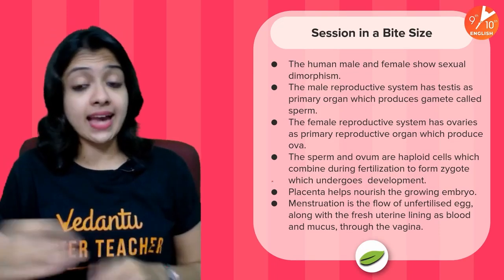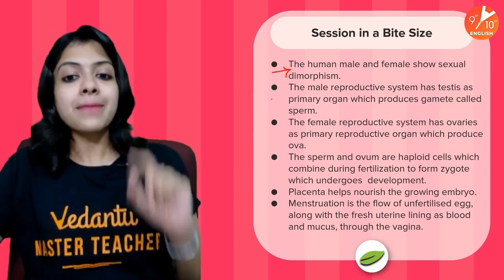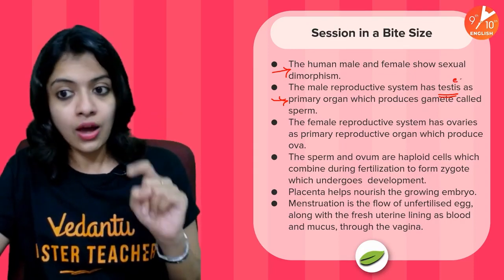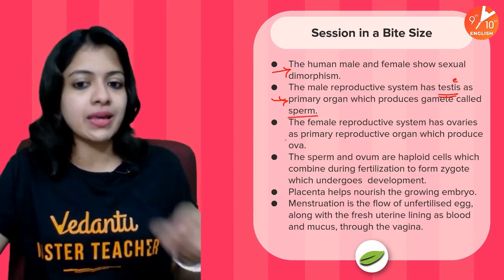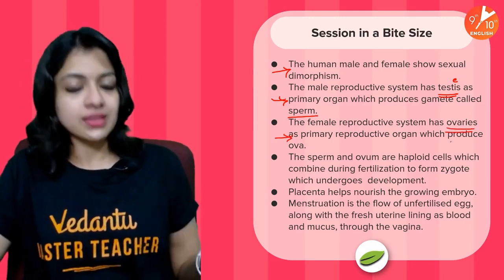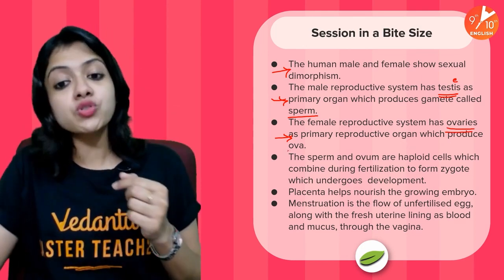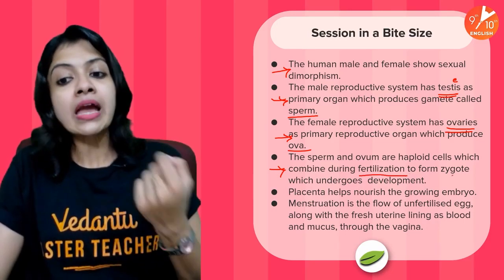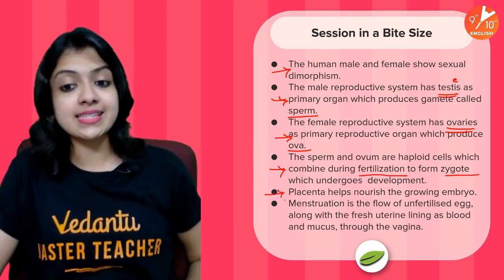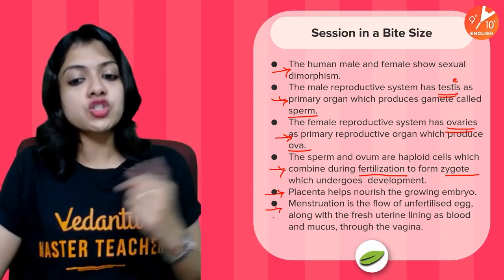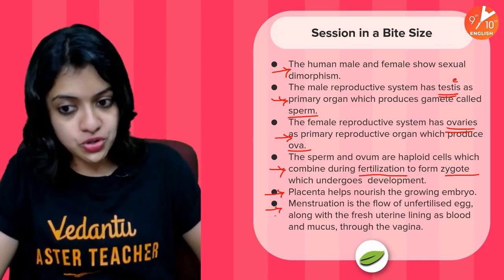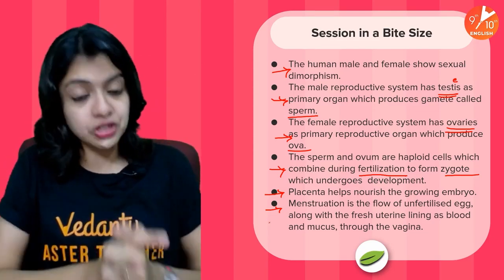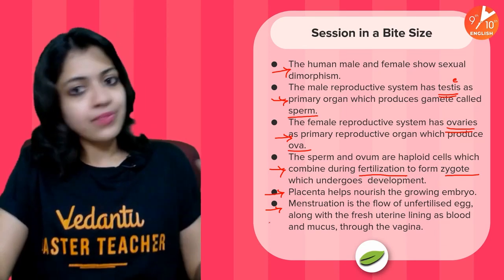So the entire session in bite size: humans show sexual dimorphism. The male reproductive system has testes as the primary reproductive organ — 'testis' is singular, 'testes' is plural — which produce gametes called sperm. The female reproductive system has ovaries, which produce ova or eggs. Sperm and ovum are haploid cells; they combine during fertilization to form a zygote, which undergoes further development. The placenta helps nourish the growing embryo. Menstruation is the flow of the unfertilized egg along with the fresh uterine lining as blood and mucus through the vagina. This is the entire human reproduction topic according to the CBSE Class 10 syllabus.